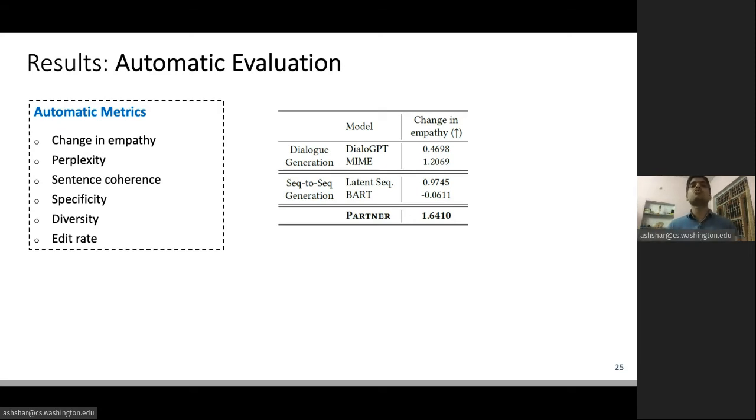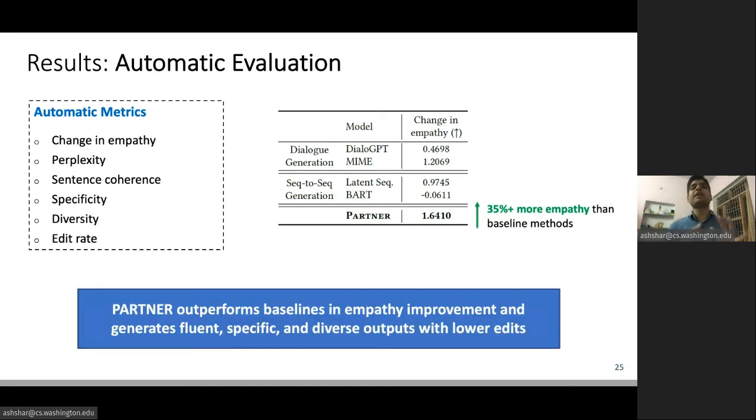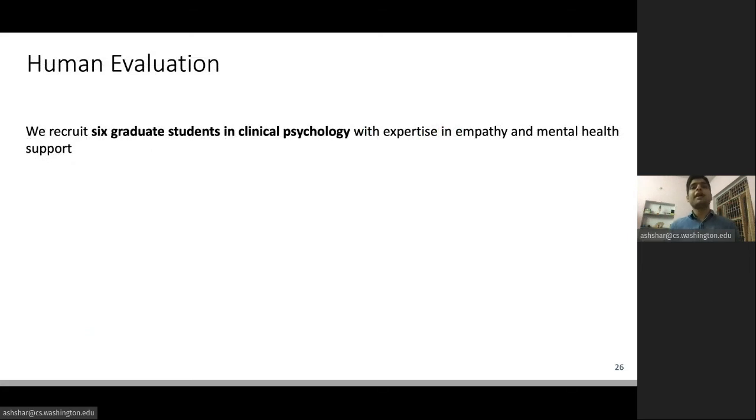Therefore, with PARTNER, those posts can be made over 150% more empathic. Also, this gain is more than 35% higher than all of our baseline methods, which are state-of-the-art for similar tasks. To conclude, we find that PARTNER outperforms baselines in empathy improvement, and it's simultaneously able to generate fluent, specific, and diverse outputs. And in fact, it is able to achieve that with lower number of edits.